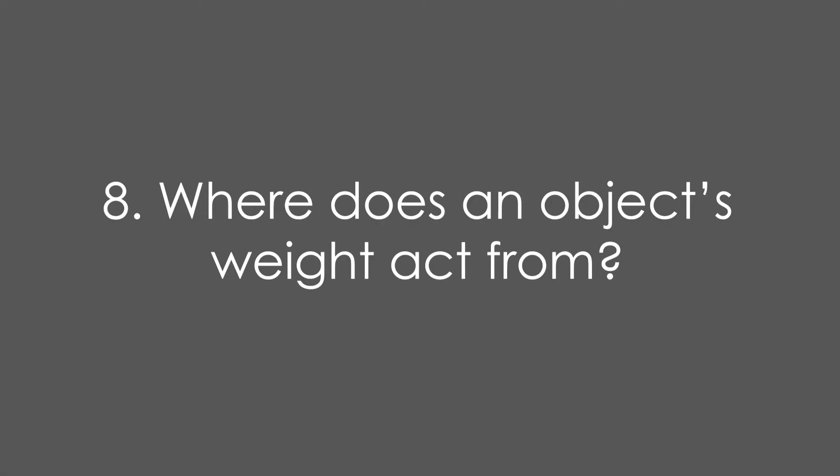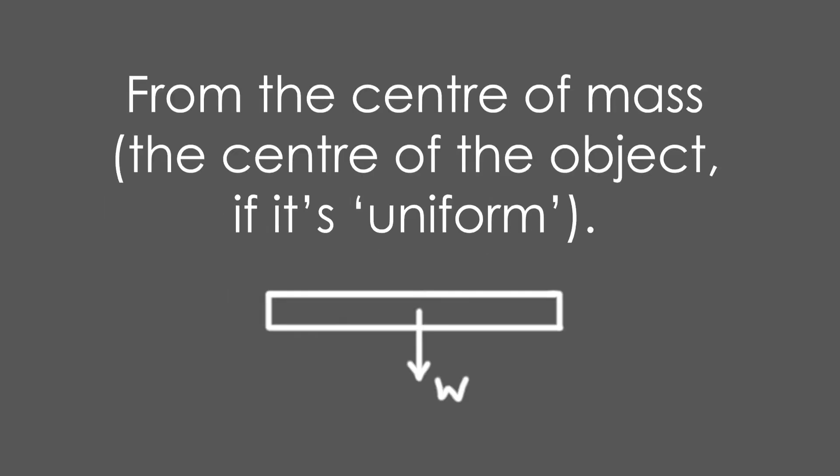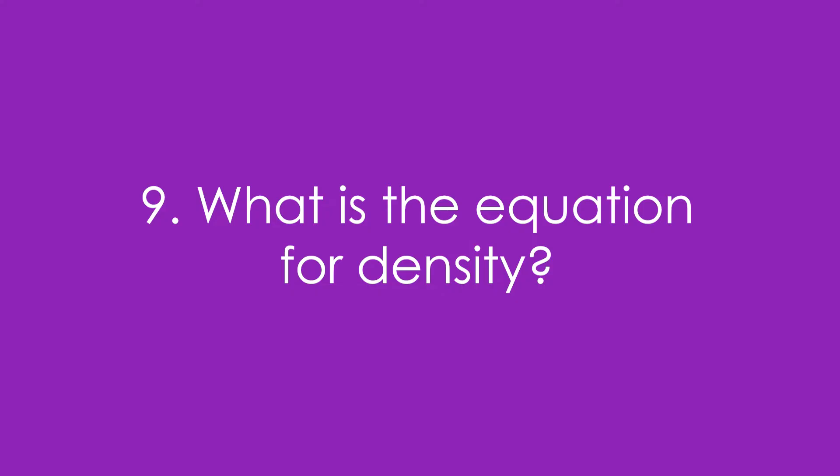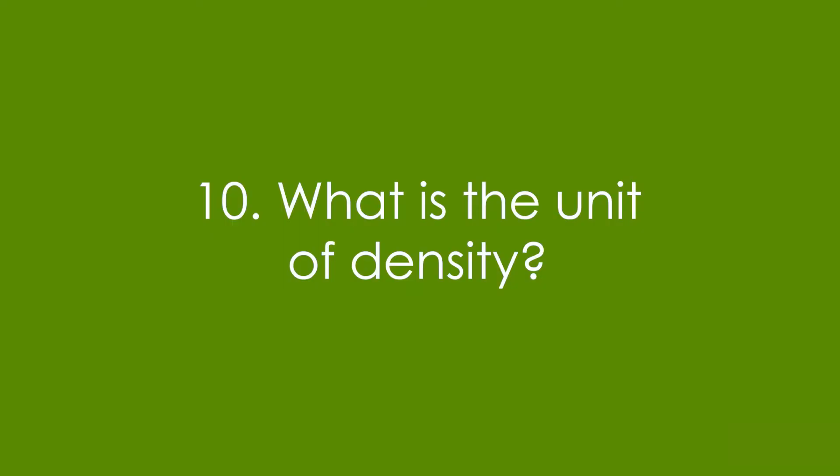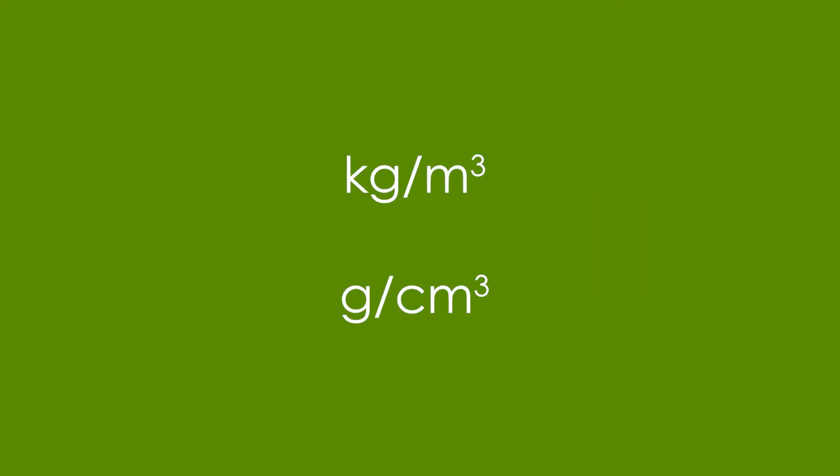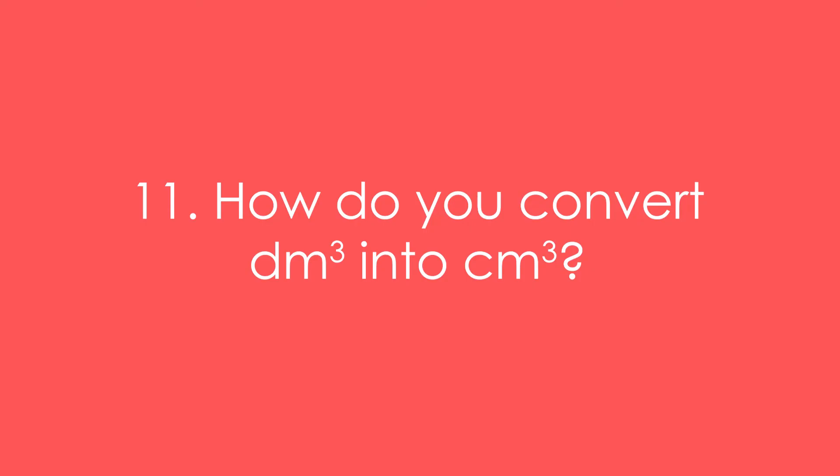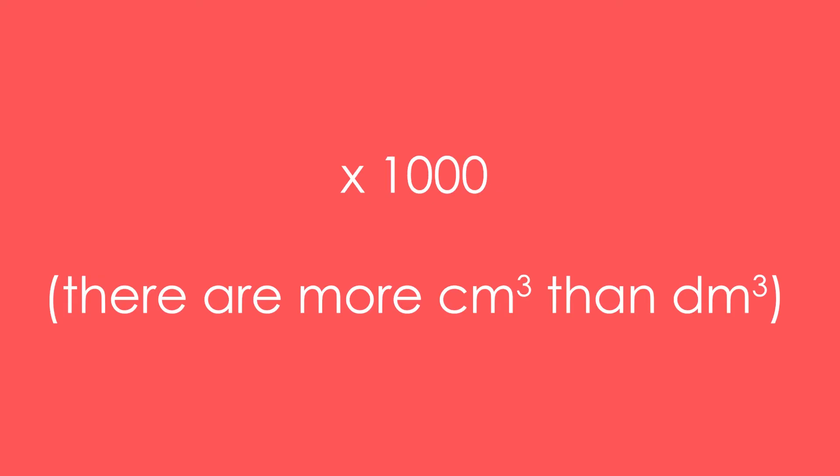Eight, where does an object's weight act from? From the centre of mass, thus the centre of the object if it's a uniform object. Nine, what is the equation for density? Density is equal to mass divided by volume, or rho equals m over v in symbol form. Ten, what is the unit of density? It's kilograms per metre cubed, or sometimes grams per centimetre cubed. Eleven, how do you convert decimetres cubed into centimetres cubed? You times by a thousand. That's because there are always going to be more centimetres cubed than decimetres cubed.